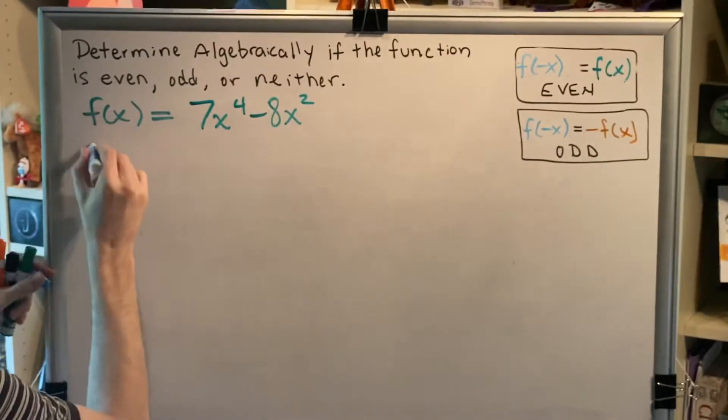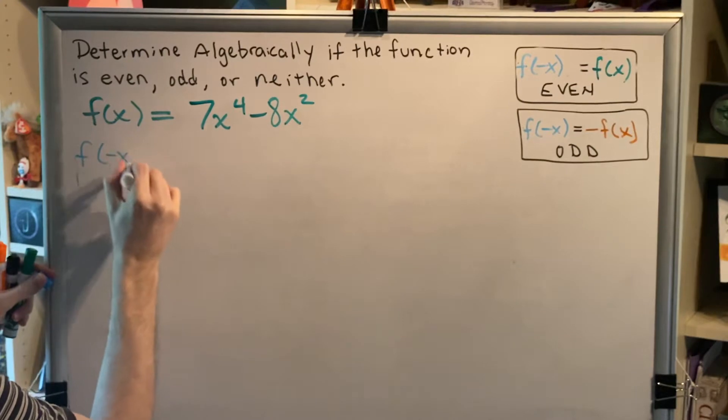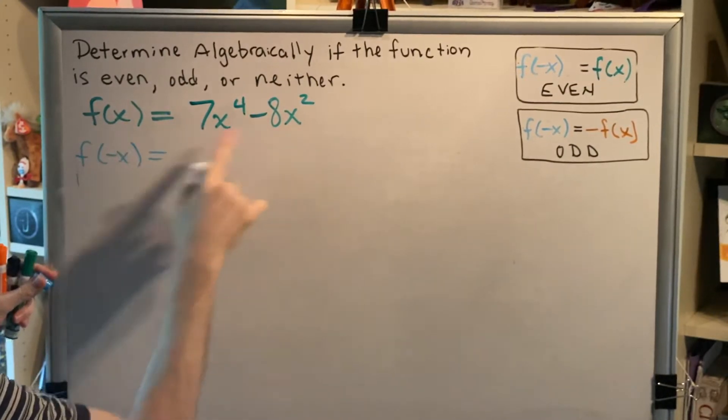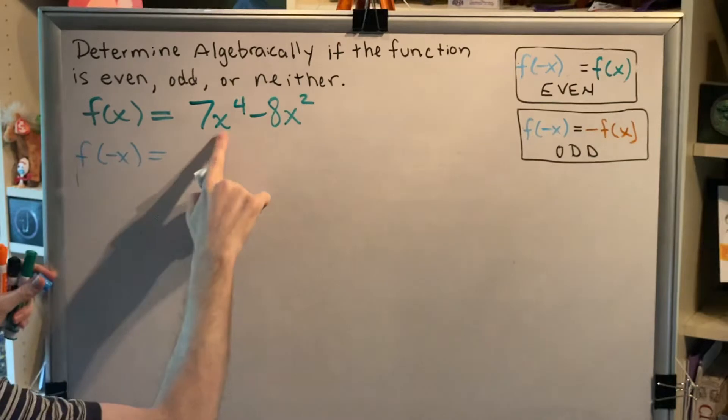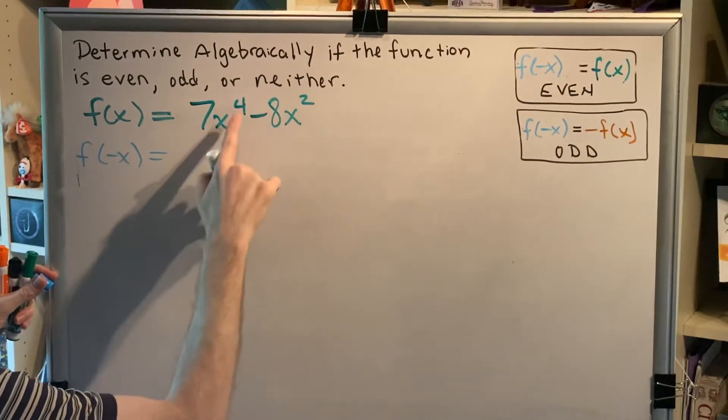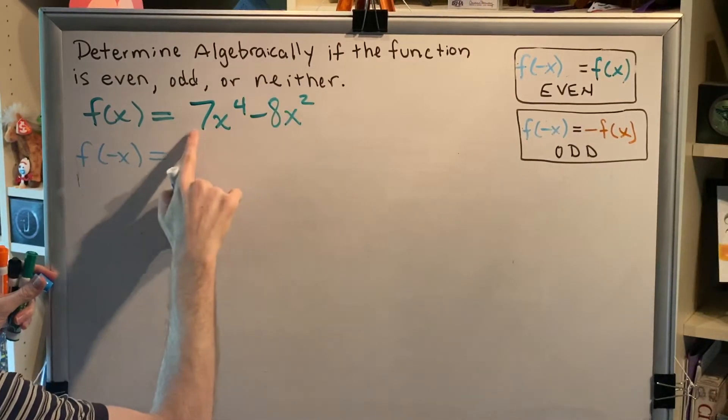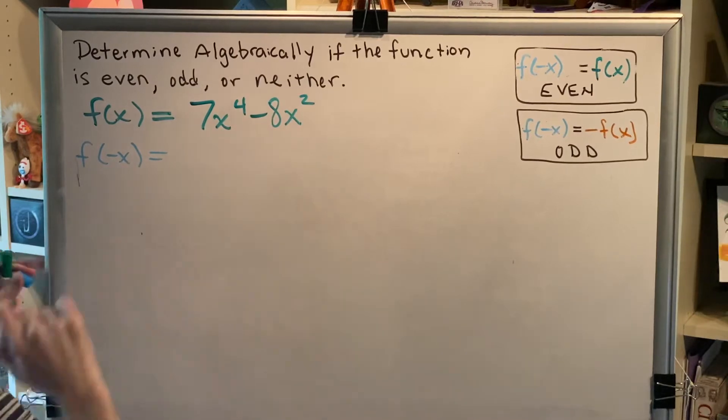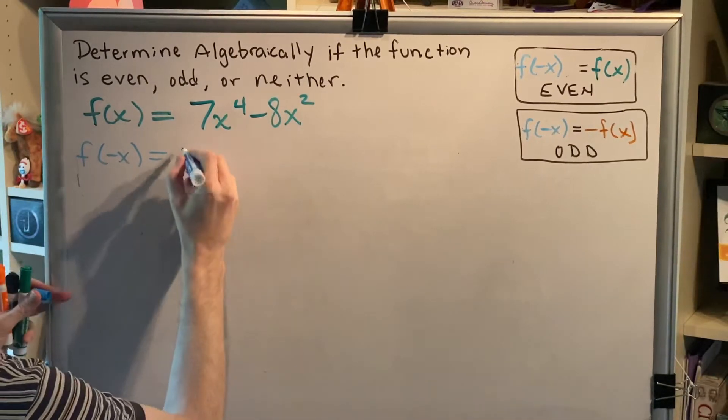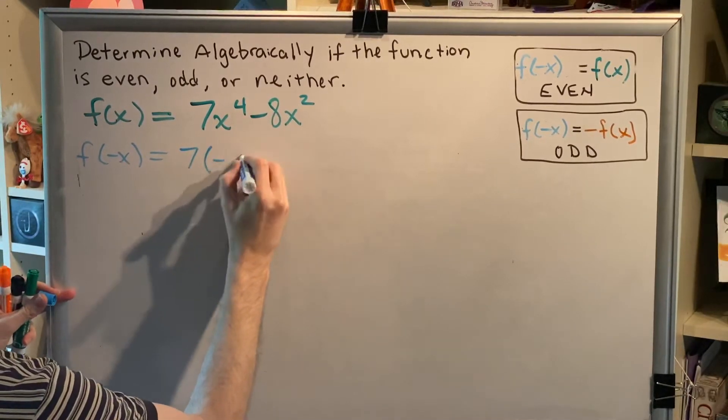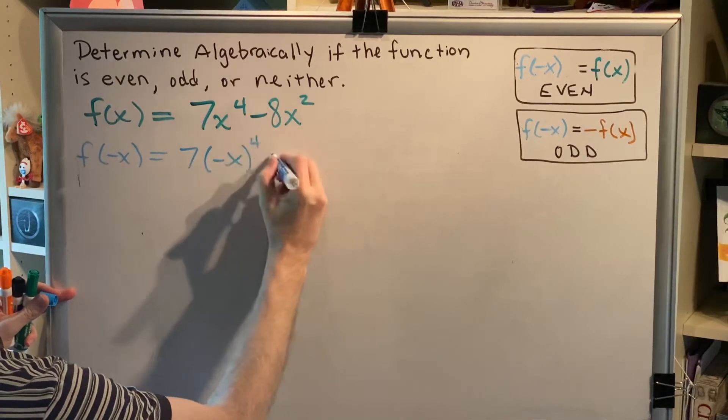So we've got f of negative x equals... Everywhere we see x, we're going to put negative x. And if the x that we're replacing has an exponent or a multiplier, then we're going to put it in parentheses. So we'll have 7, parenthesis, negative x, close parenthesis to the fourth,